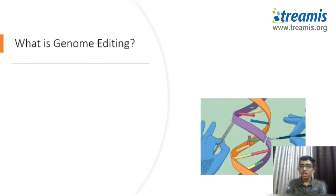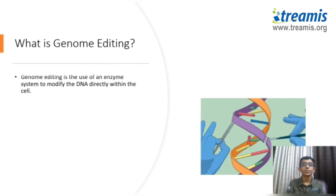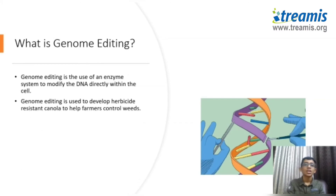What is genome editing? Genome editing is the use of an enzyme system to modify DNA very precisely within the cell. It is used to develop herbicide-resistant canola to help farmers control weeds and protect their crops.